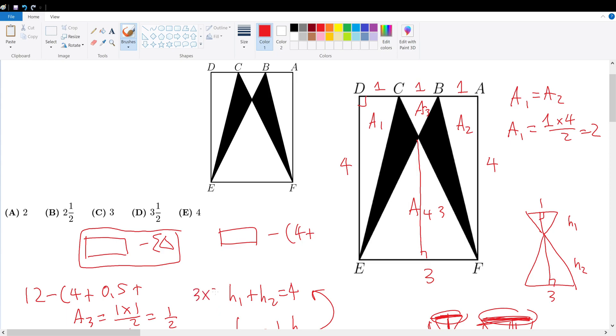A4 is base of 3 times the height of 3 divided by 2, which is 9 over 2, which is 4.5. 4.5 plus 0.5 is 5 plus 4 is 9, which is equal to 3. Therefore, your final answer would be choice C.